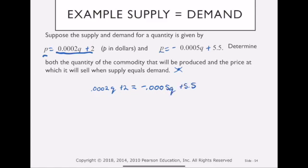Now what's really nice is I have an equation in a single variable, that variable being Q. So I'm going to solve for Q. First thing I want to do is combine like terms. So I'm going to add 0.0005Q to both sides. That means I have 0.0007Q plus 2 equals 5.5.